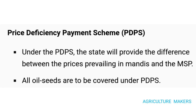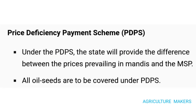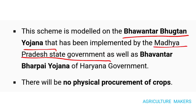The second component is the Price Deficiency Payment Scheme (PDPS). Under PDPS, the state will provide the difference between the price prevailing in the mandis and the MSP. All oil seeds are to be covered under this PDPS. This scheme is modeled on the basis of Bhavantar Bhugtan Yojana implemented by the Madhya Pradesh state government, as well as Bhavantar Bharpa Yojana implemented in Haryana. There is no physical procurement of crops — only the difference between mandi price and MSP is paid.